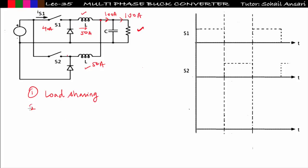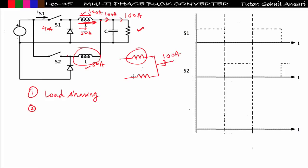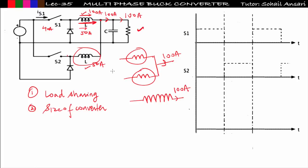The second advantage: if only one buck converter carries 100 amperes, the inductor must be much larger. By connecting two buck converters in parallel, each inductor carries only 50 amperes, so smaller inductors are required. Overall, the size of the converter reduces. If I use one large inductor having many turns to sustain 100 amperes it would be bulky; with two parallel converters, two small inductors suffice. So the size of the converter decreases in a multi-phase buck converter.